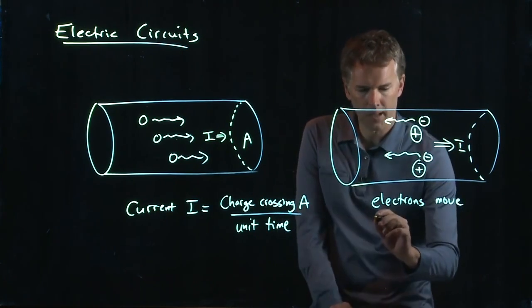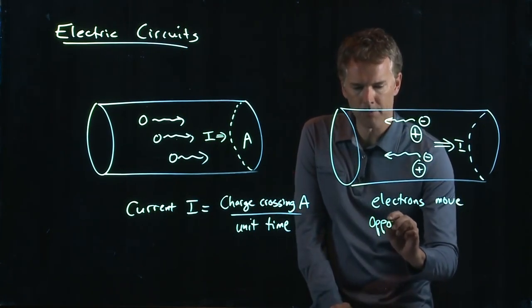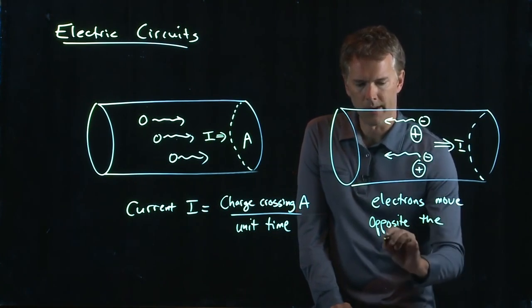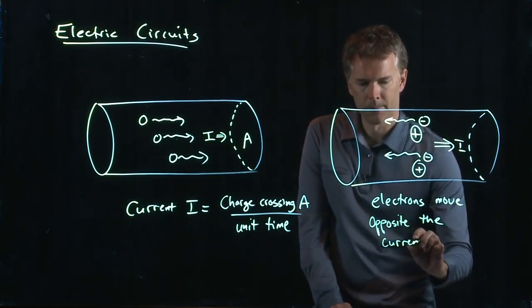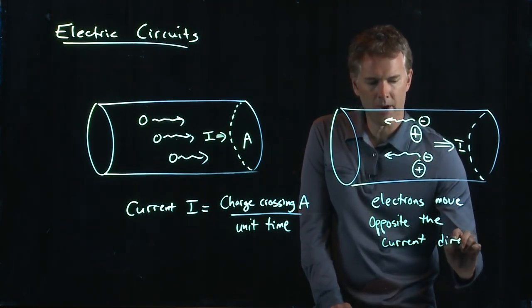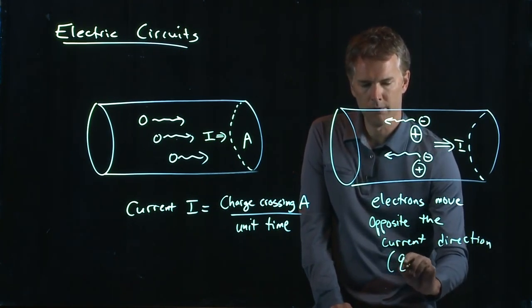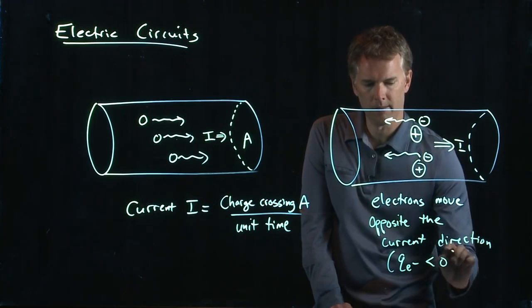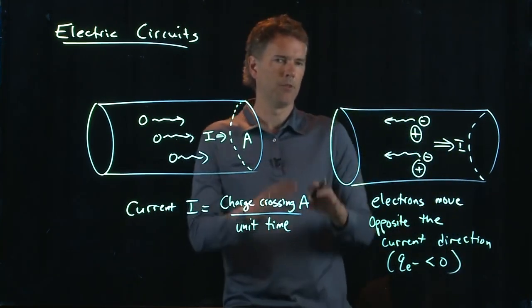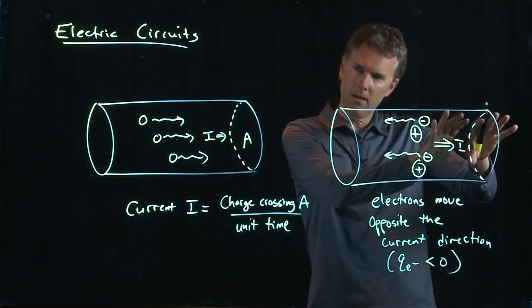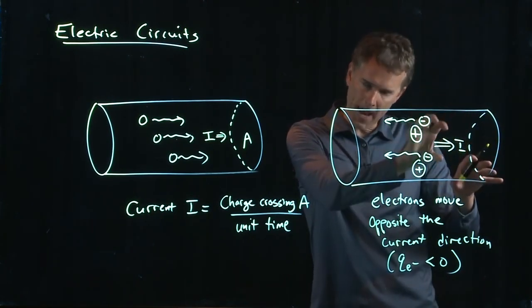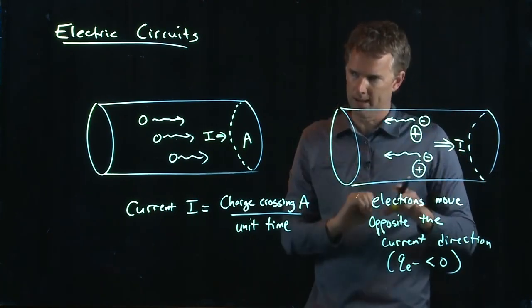Okay, so the electrons move opposite the current direction. And that's because they are negatively charged. All right, q for an E minus is negative. And so a positive current to the right is really the same as negative electrons moving to the left.